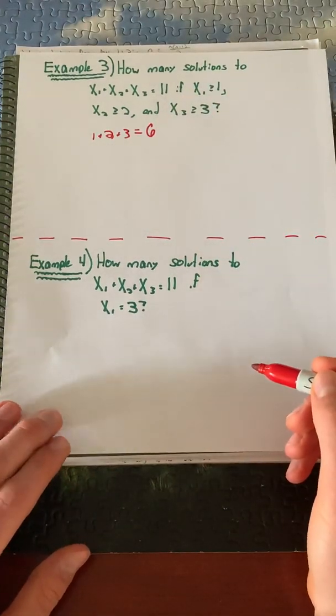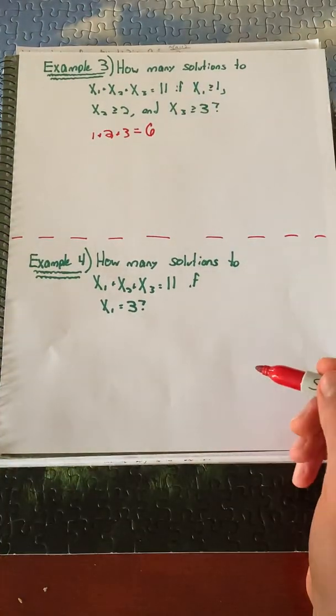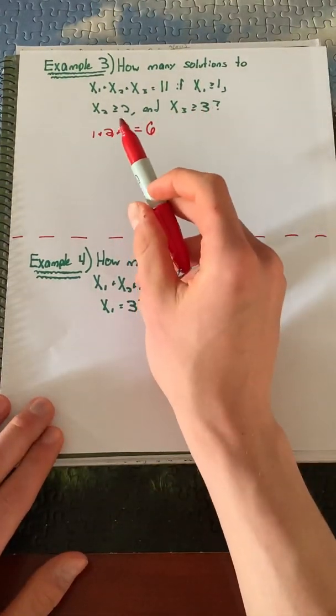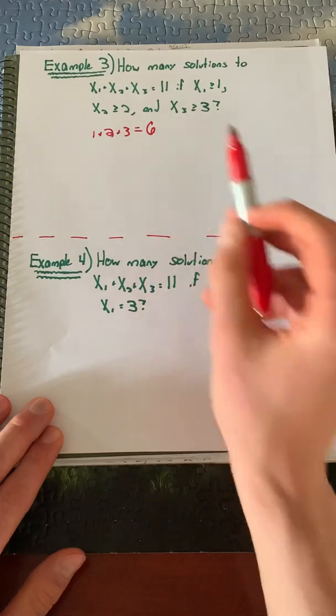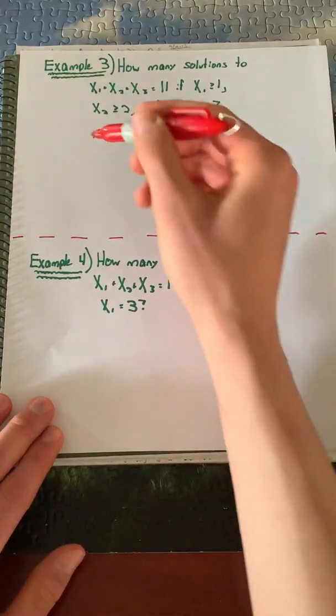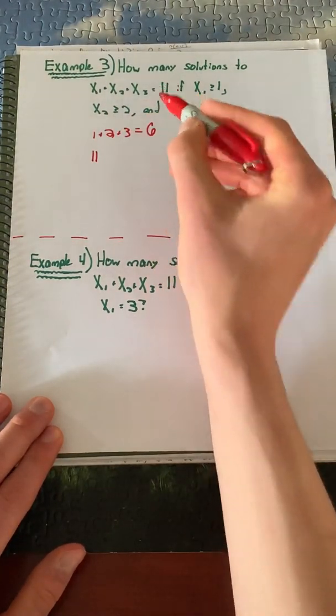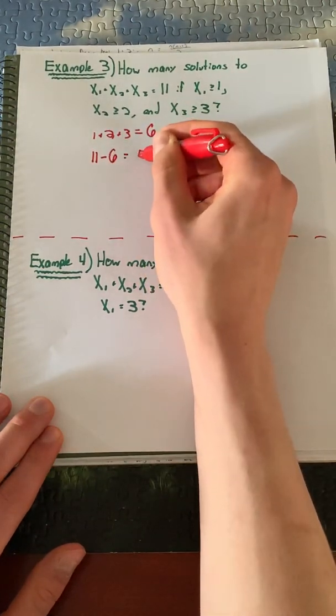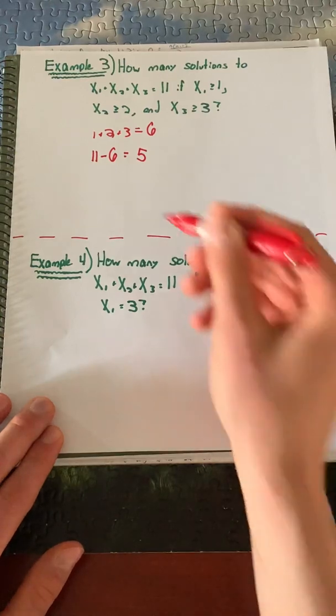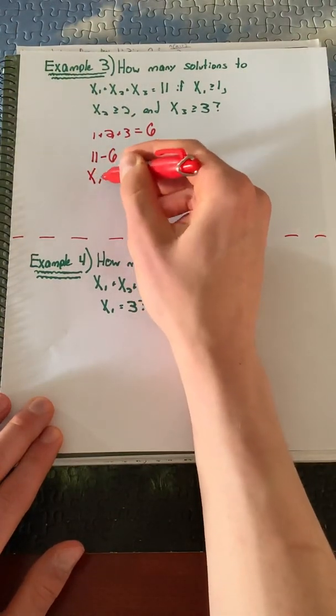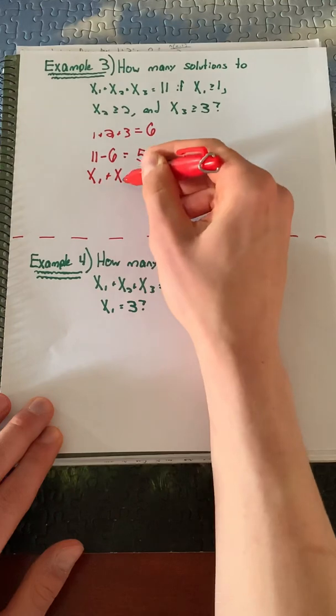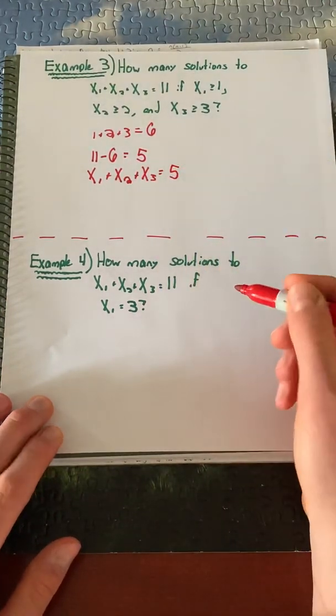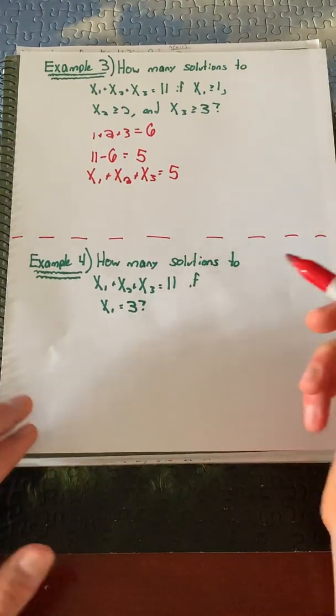This means we already have 6 totally accounted for, because x₁ at least has to be 1, x₂ has to be at least 2, and x₃ has to be at least 3. Because 11, which we're trying to add to, minus 6 equals 5, the problem we're actually solving now is x₁+x₂+x₃=5. It's how many different ways we can add up to 5.